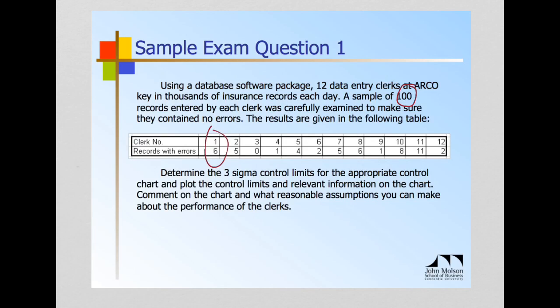Because this data is attribute, we want to use a p-chart. As opposed to the previous examples, where we had variable data, if you remember the numbers were like 0.126 and 0.127, very much a variable kind of looking data. This data is attribute, where it's how many are good versus bad kind of data. Okay, so far so good.